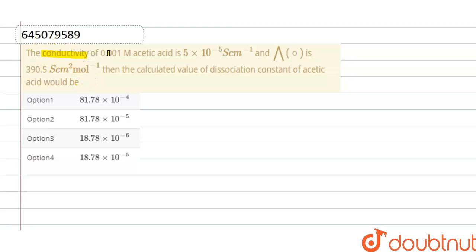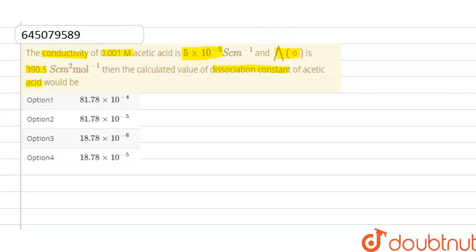The question is: the conductivity of 0.001 molar acetic acid is 5×10⁻⁵, and lambda naught is 390.5. Calculate the value of the dissociation constant of acetic acid. First, we will find the degree of dissociation, which equals molar conductivity divided by molar conductivity at infinite dilution.